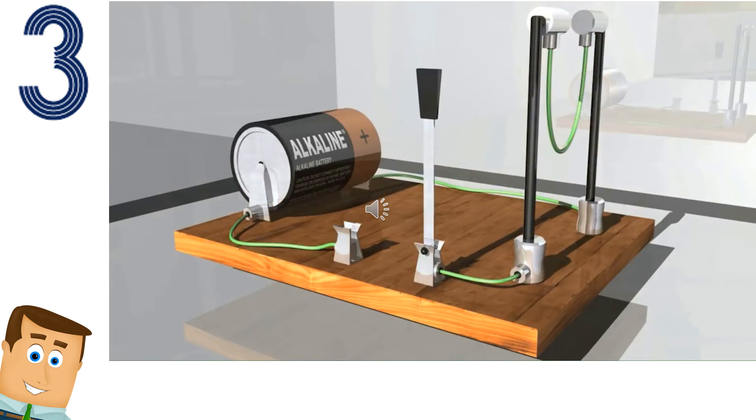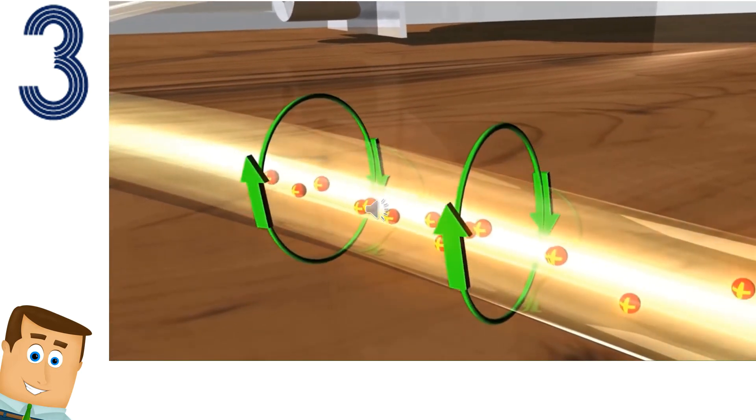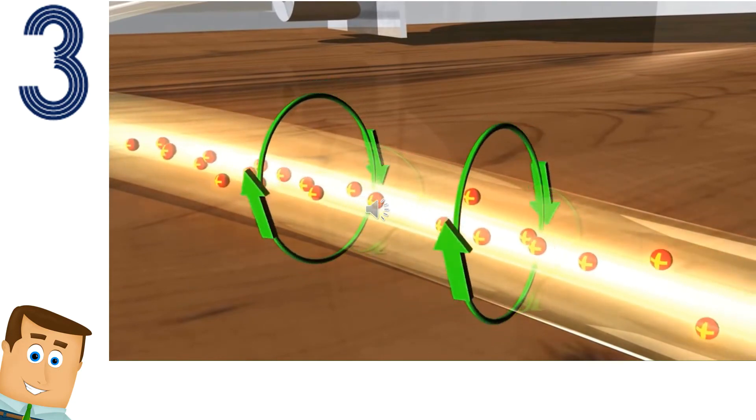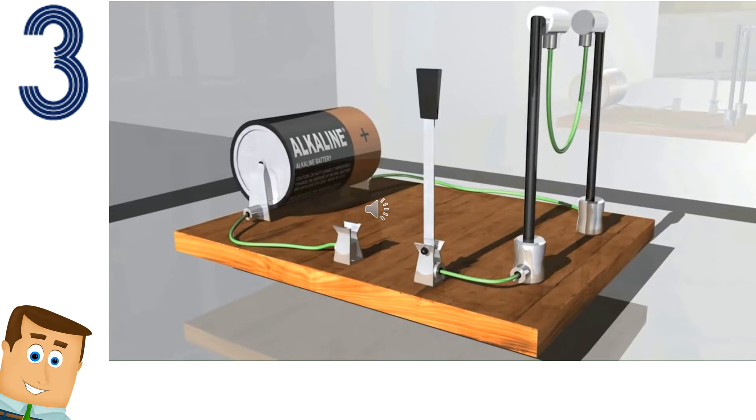Si ya observamos a mayor profundidad qué es lo que pasa en el conductor cuando están pasando, la corriente electrónica se genera un campo magnético alrededor de él.